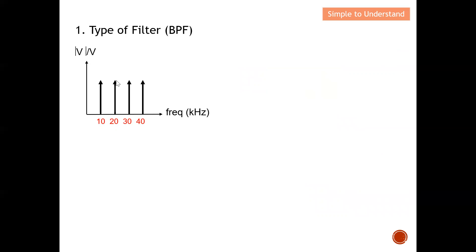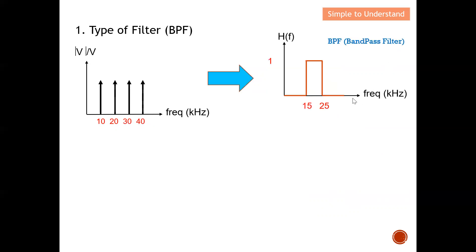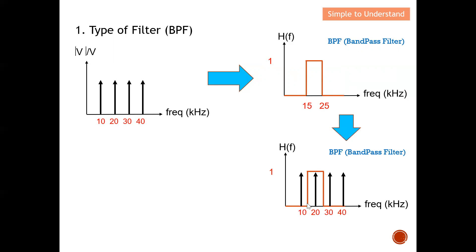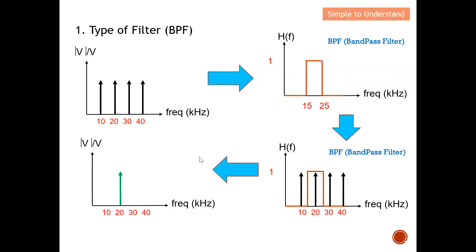Next, for the band pass filter with the same four components at 10, 20, 30, and 40 kHz, the band pass filter has cutoff frequencies at 15 kHz and 25 kHz. Putting these two diagrams together, you can see that only the 20 kHz component falls within the pass band and is able to pass through. Hence at the output of the band pass filter, we only have one component at 20 kHz.